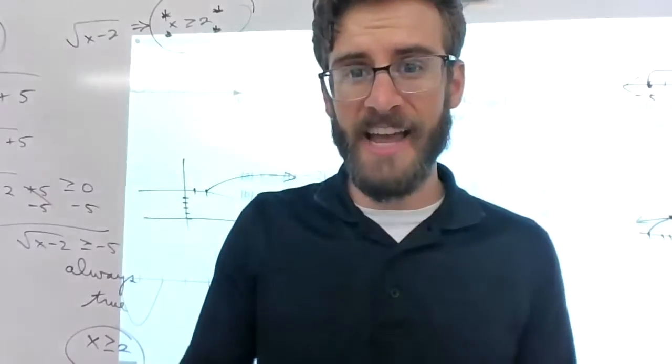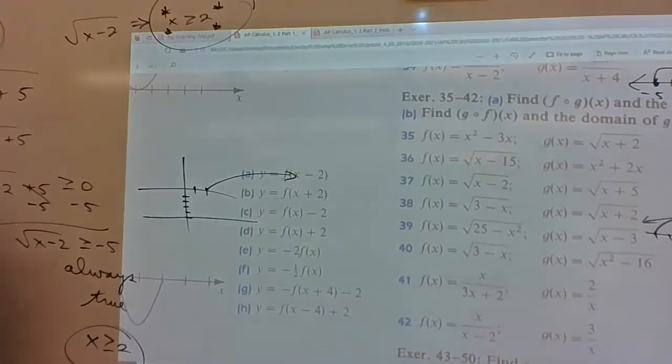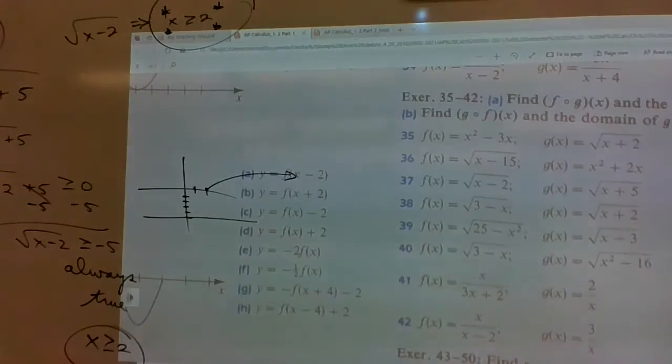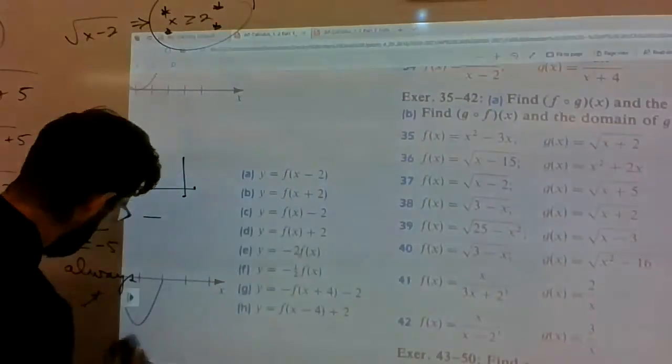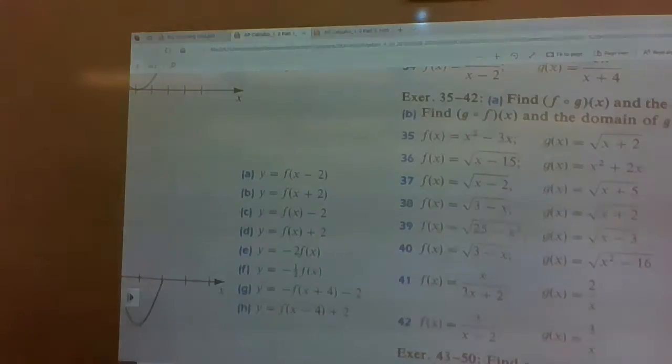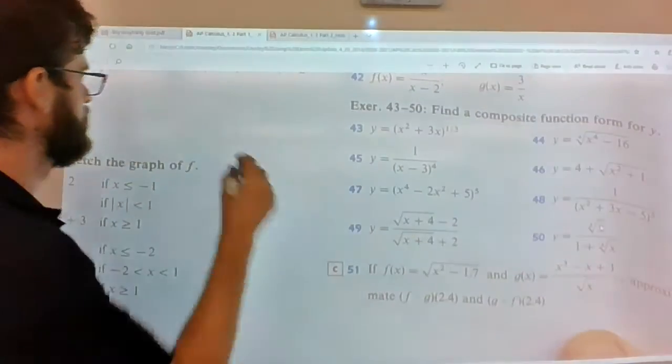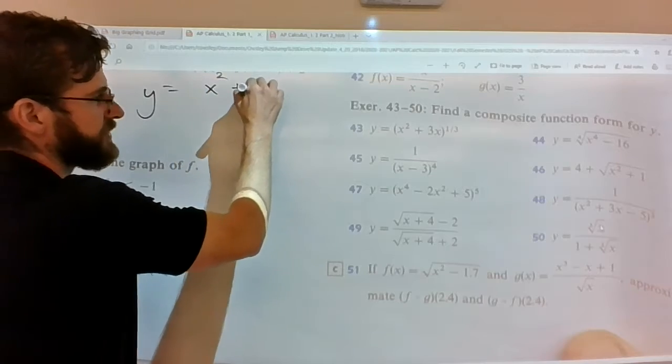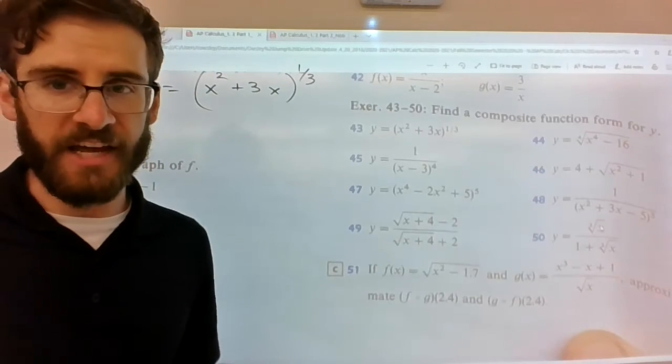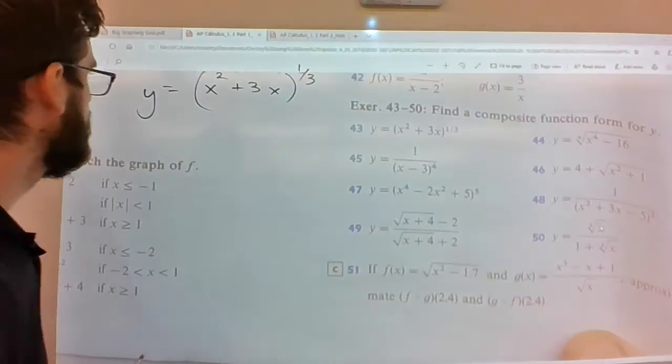Let's see if I have number 43. All right, yes, I believe we can talk through this. It says find a composite function form for y. So you got y equals (x² + 3x) to the one-third power. Now this is a complete mystery at this point. Like, what is it even asking you to do? Well, I think in the reading it showed you a few examples of how you can take a complex function and then rewrite it in terms of two simpler functions. Here's what they're getting after.